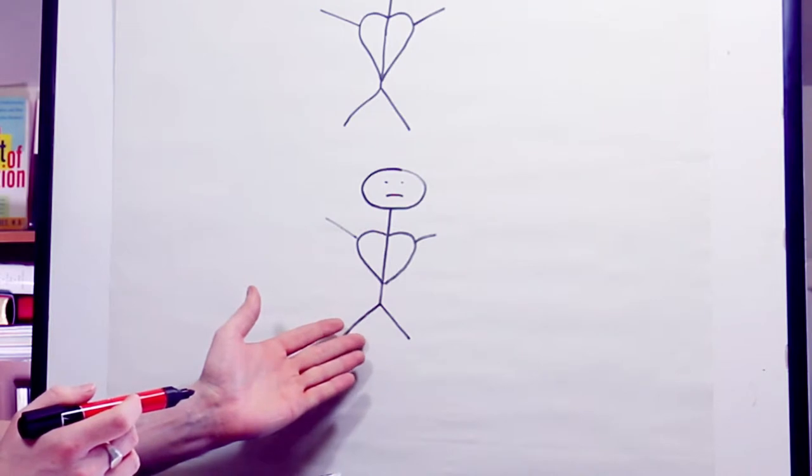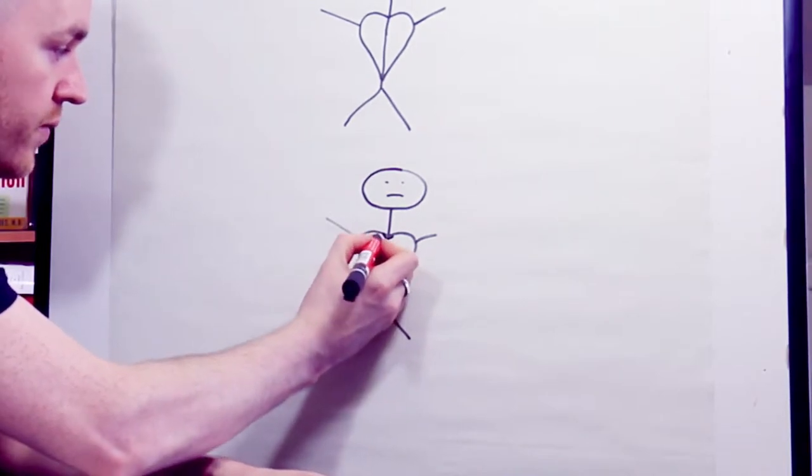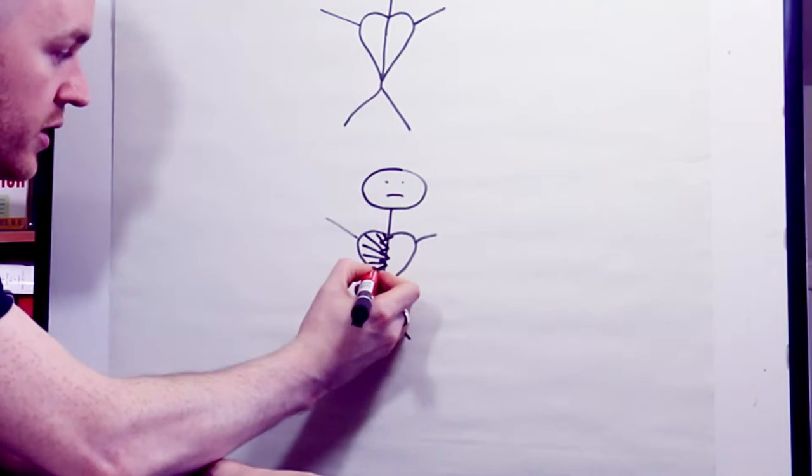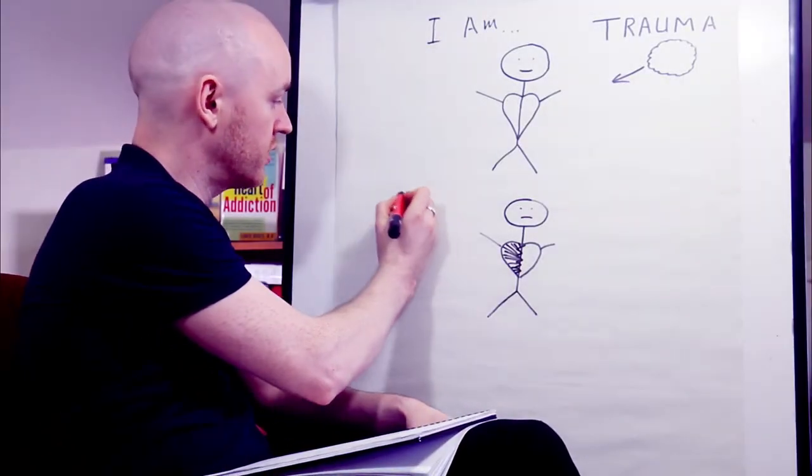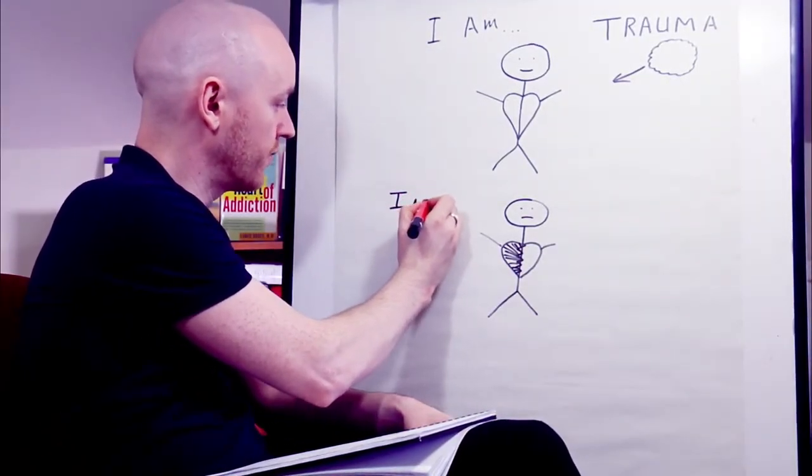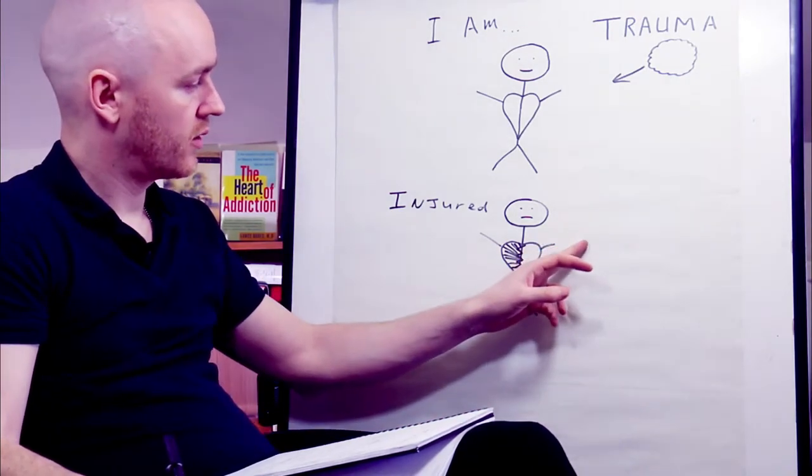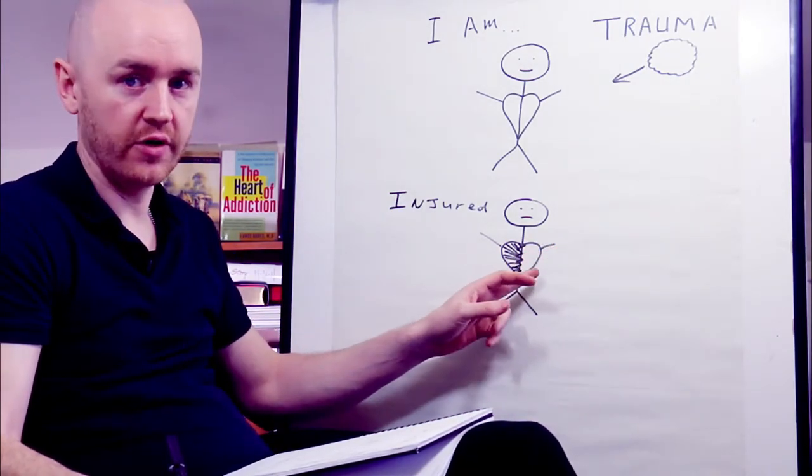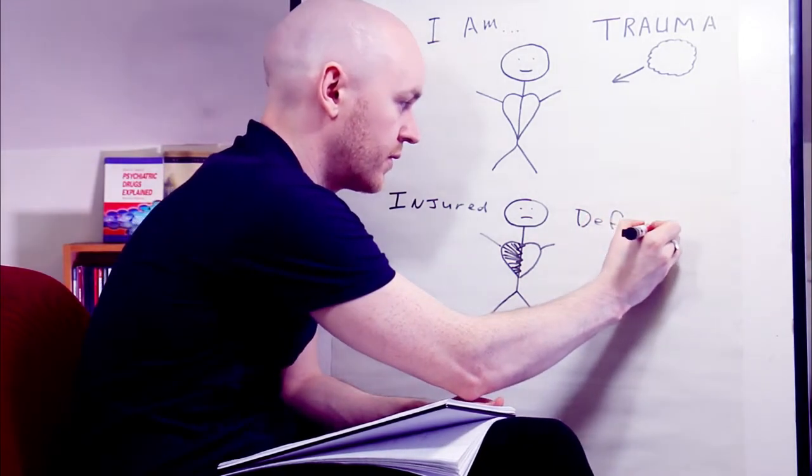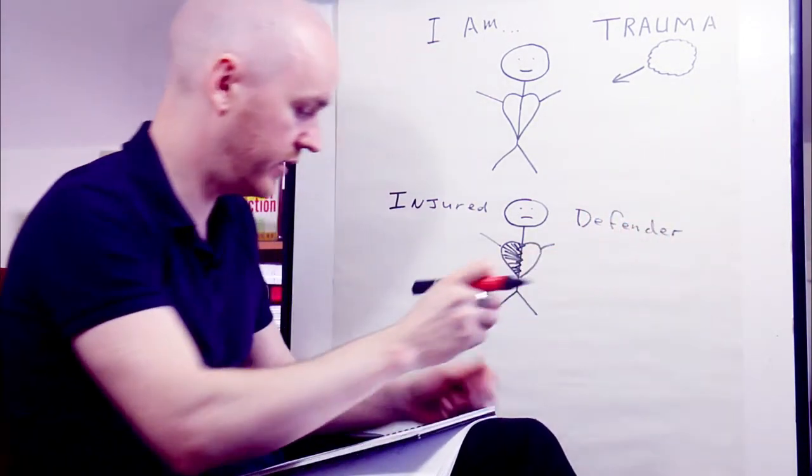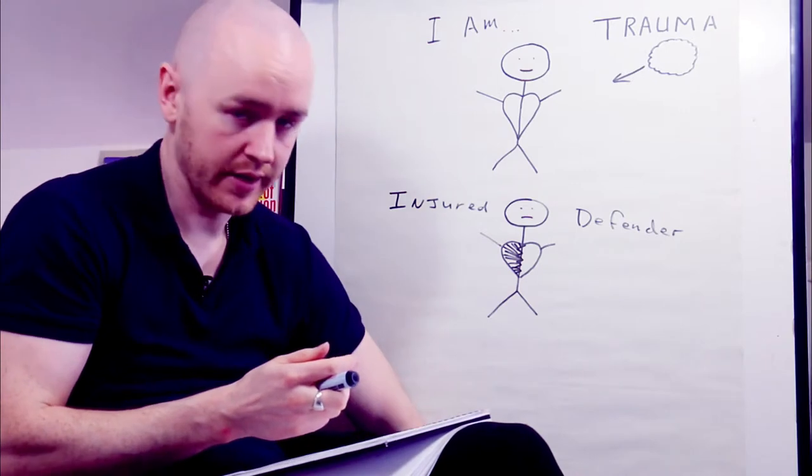This leads us to our second step. The injury is there. So it's kind of a break that happens in the person. And this side is carrying the injury. This is the hurt part. So I want you to think of that part as the injured self. Hurt or injured. And this side, which pretends like it's fine, becomes the defender. Or the coper, you could say.